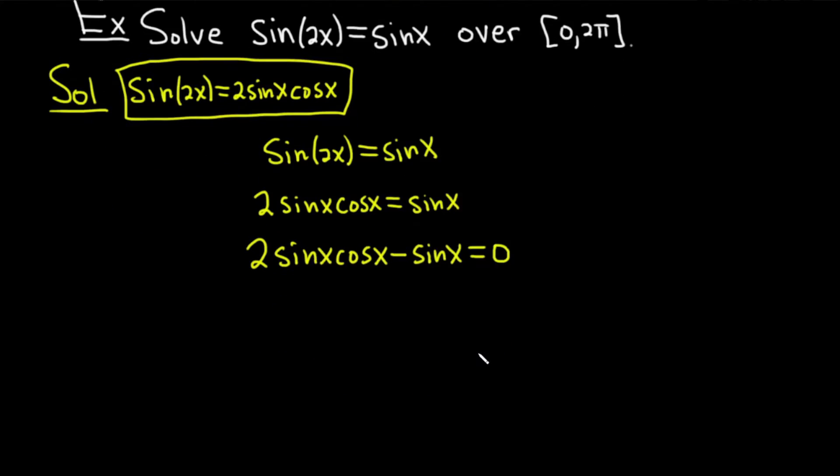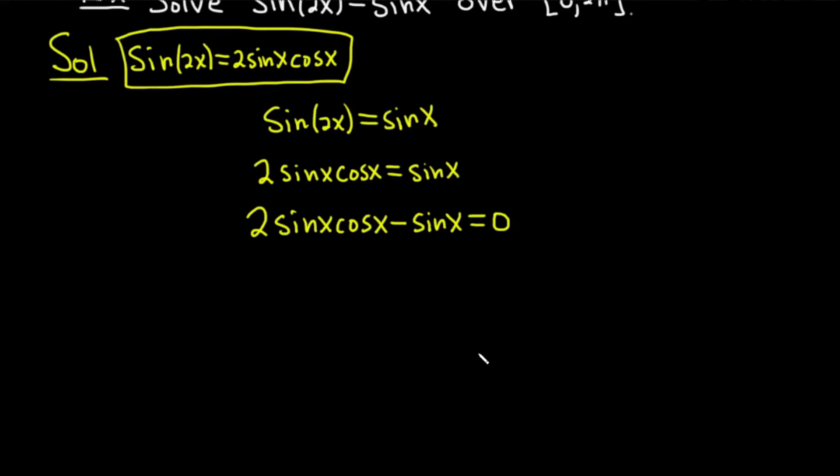At this point, we can factor out a common factor of sine x. So we have sine x parentheses 2 cosine x minus 1, and that's equal to 0. You can check: sine x times 2 cosine x is 2 sine x cosine x. Sine x times negative 1 is negative sine x.